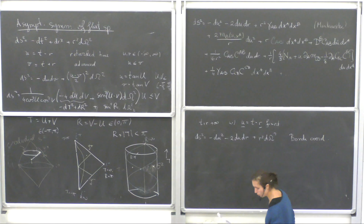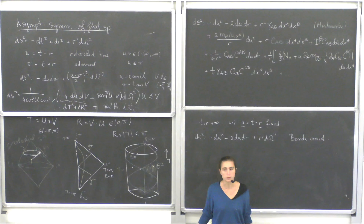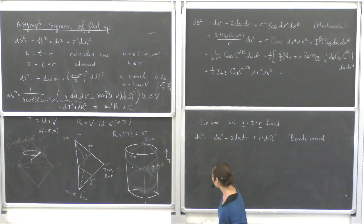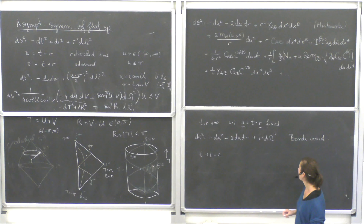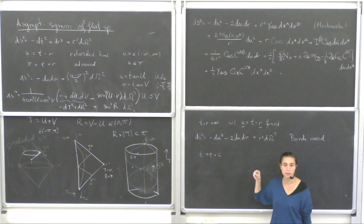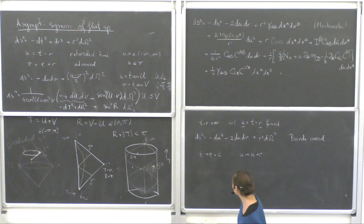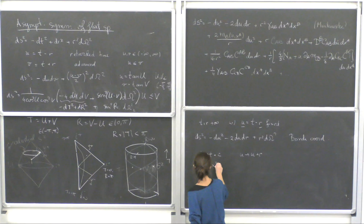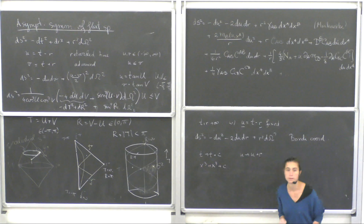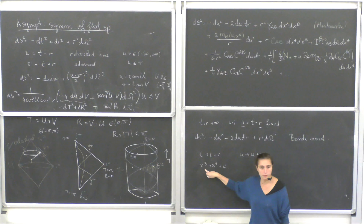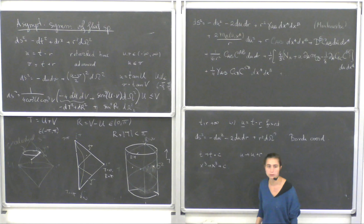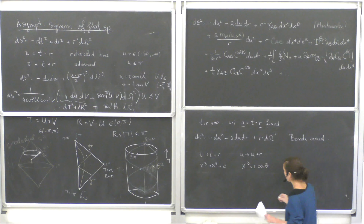We're very interested in what happens to the celestial S² as we approach ℐ⁺. Looking at the isometries of Minkowski space: translations include time translations, which in Bondi coordinates simply send u → u + constant. Space translations are trickier because we're in spherical coordinates — for example, x³ = r cos θ, and dx³ brings in both dr and dθ terms.